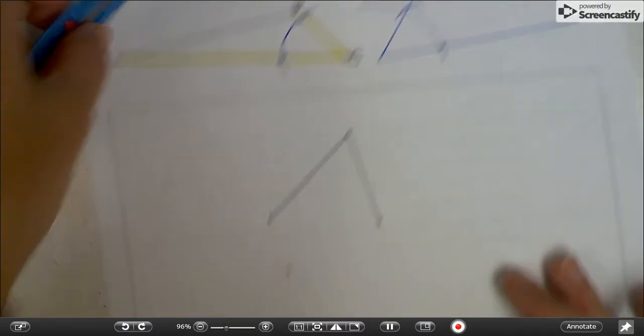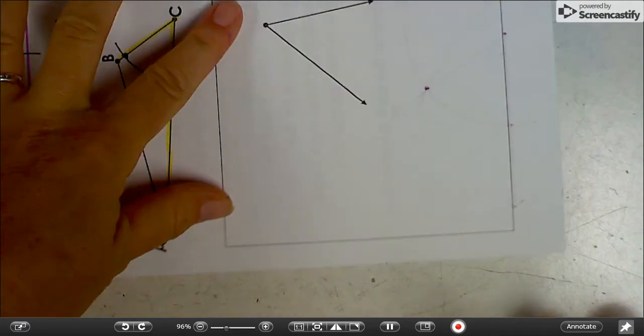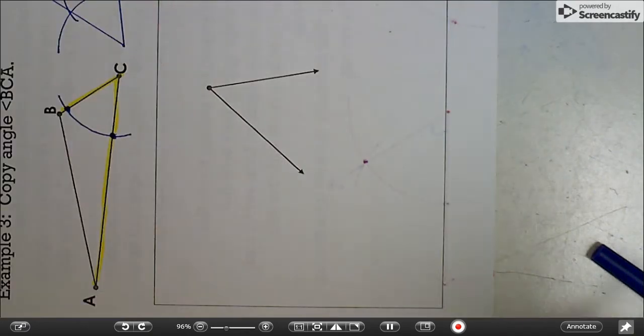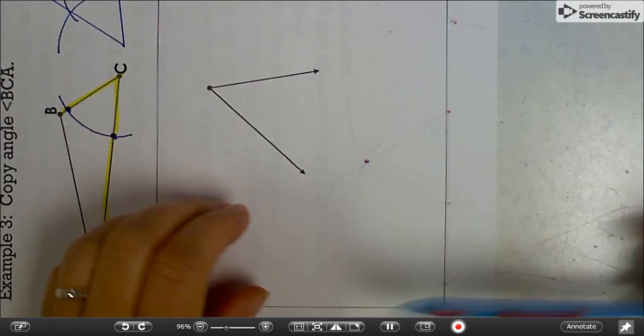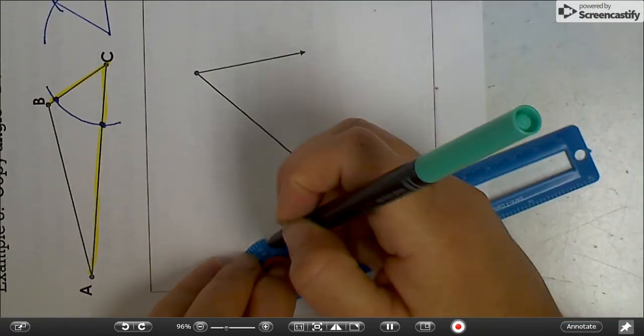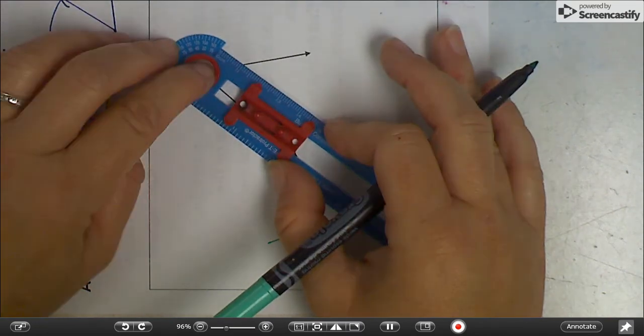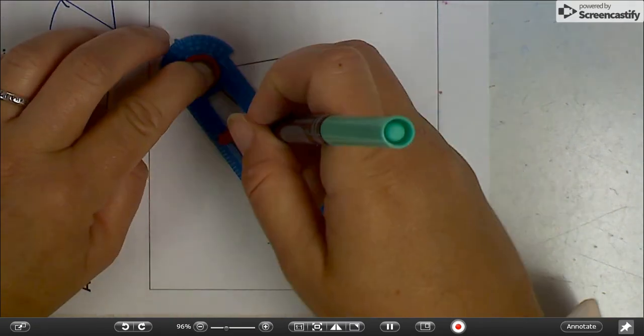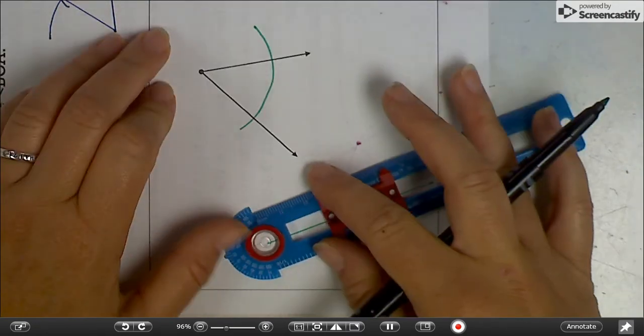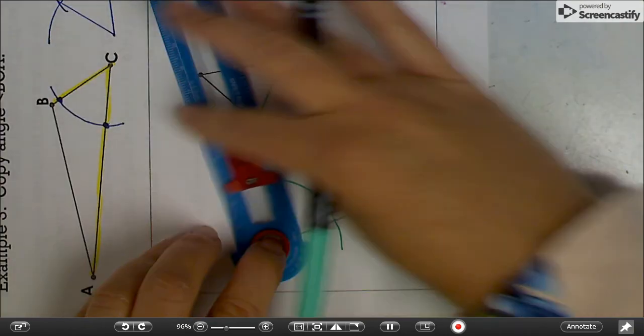And one more. I'm going to, again, turn my paper because I don't like to work upside down. I'll draw a new bottom to my angle. Just using the ruler. I need to draw an arc on my original angle and the same arc on my new angle. You should be good by now. So if you can do it on your own, you don't really need to watch this.